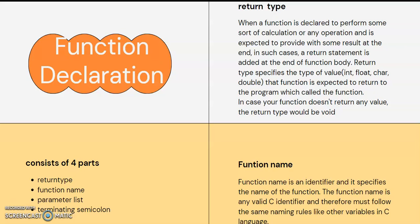The return type is the type of value that the function is expected to return to the program which called the function.